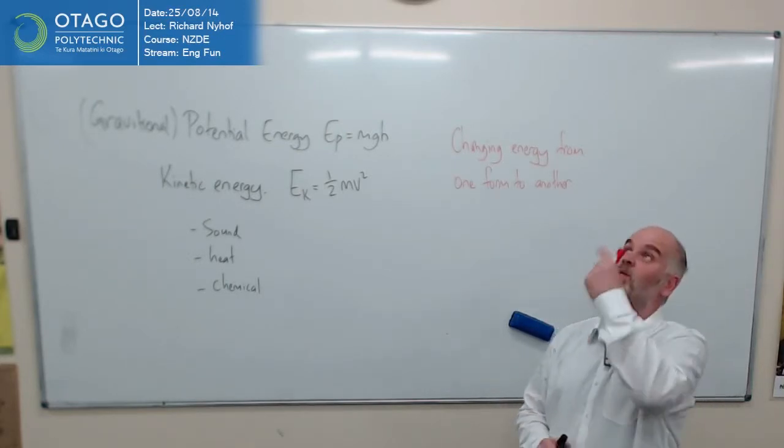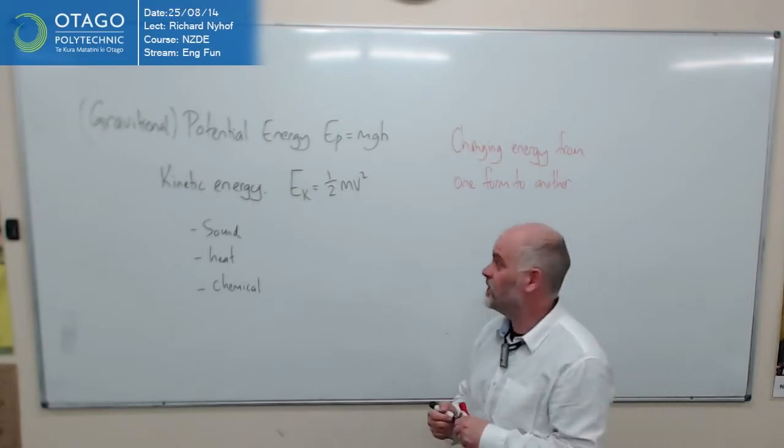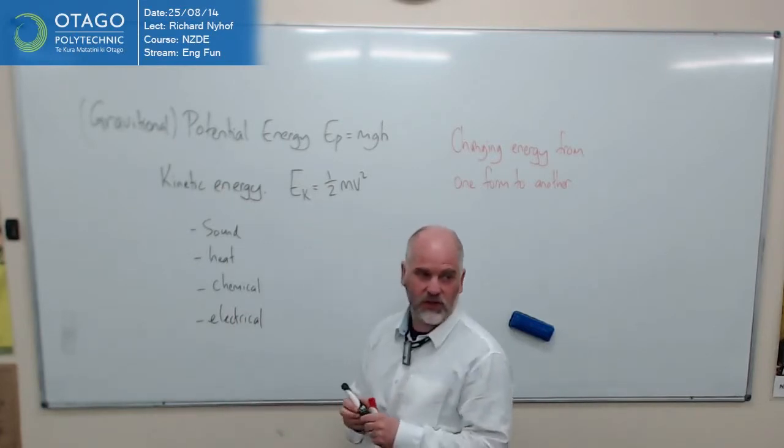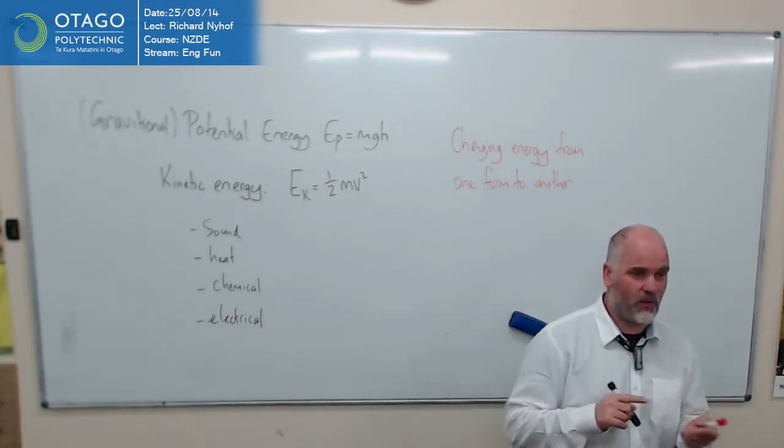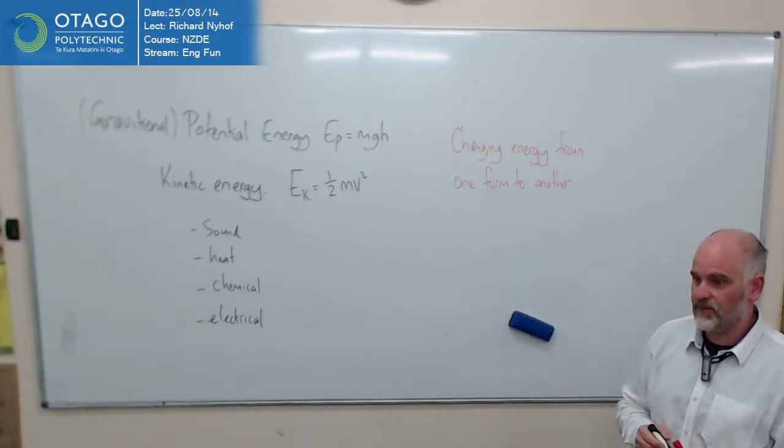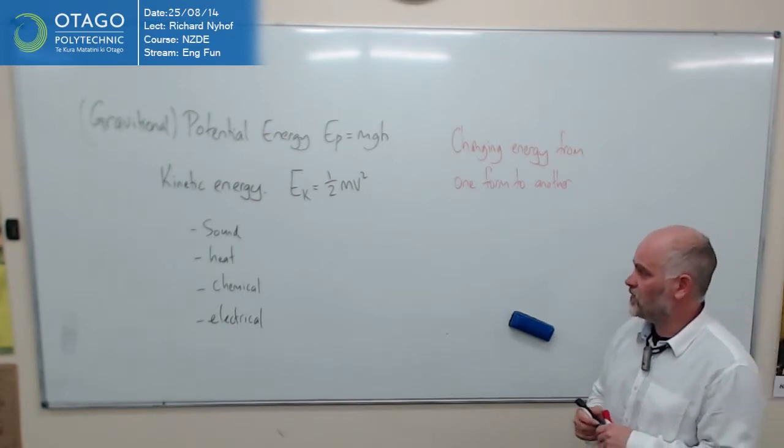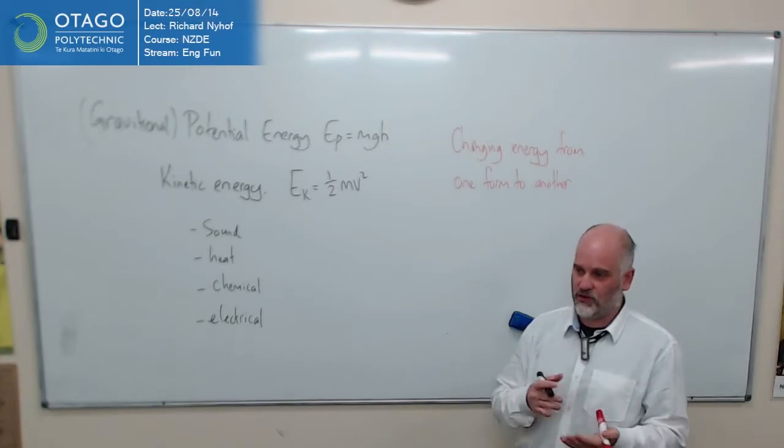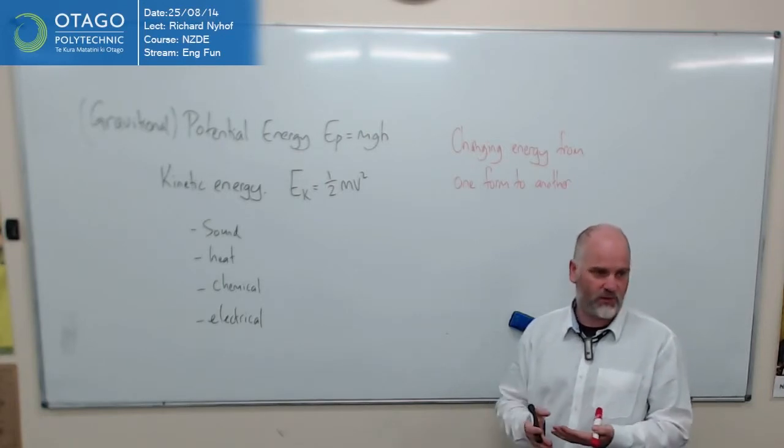You're used to things like, you know, what makes the lights go, electrical. There's a whole bunch of different types of energy that we can change from one form to another. And there's what's called the principle of the conservation of energy that says that energy is neither created or destroyed, it's just changed from one form to another.